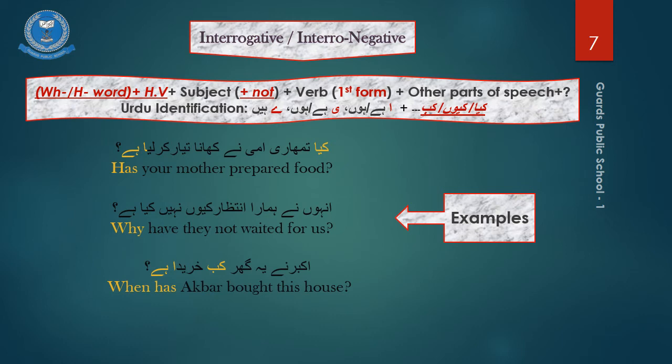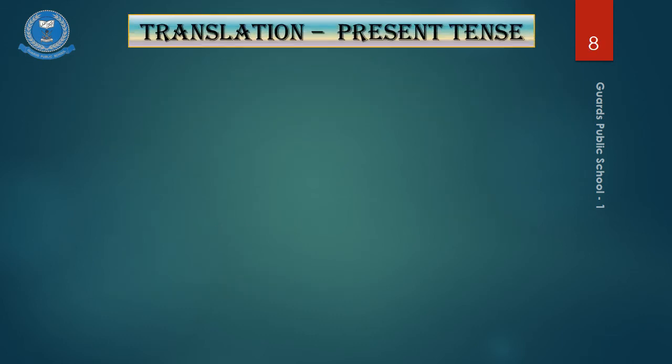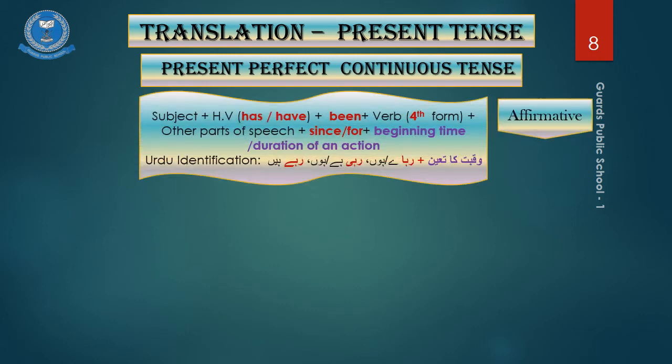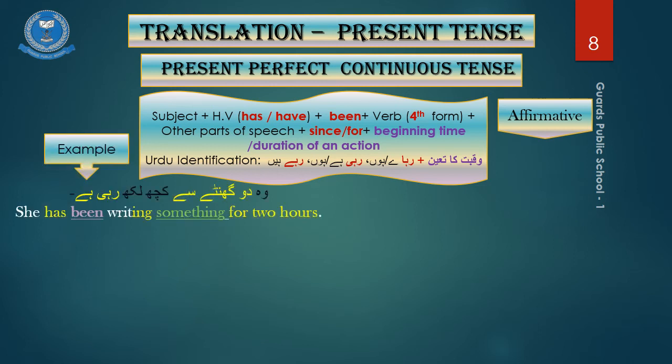Now, let's talk about the last aspect of the present tense, the present perfect continuous tense. We have already learnt about this aspect in detail in my previous video. So now, let's learn about the Urdu identifications of this aspect. As you can see here, the Urdu identifications are same as the continuous tense. But here we have an addition of either the beginning time or complete duration of an action. For example, wo do gante se kuch likh rahi hai. She has been writing something for two hours.